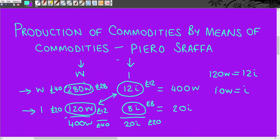The reason it's important that this £12 and this £12 can exchange for each other is because Sraffa says there's only one set of prices at which this society can reproduce itself. Suppose we take a different total: say the wheat industry priced its products at £60 and the iron industry at £20. So then we need 60 divided by 400, meaning each unit of wheat is £0.15.